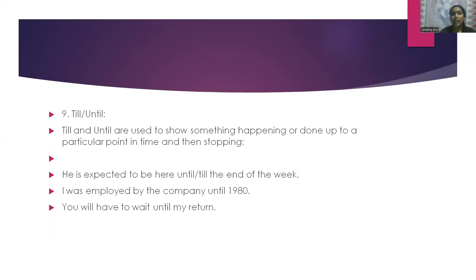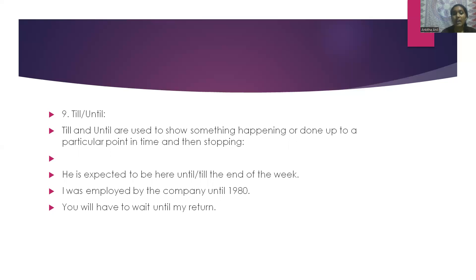The next words are 'till' or 'until'. Till and until are used to show something happening or done up to a particular point in time and then stopping. For example: he is expected to be here till the end of the week, or until the end of the week. I was employed by the company until 1980. You will have to wait until my return.